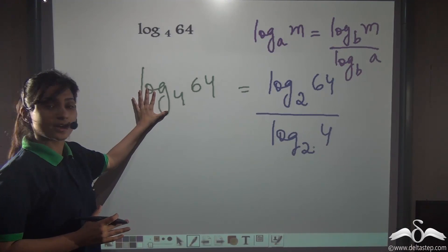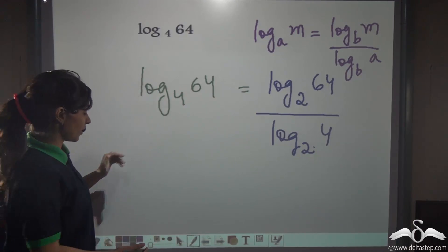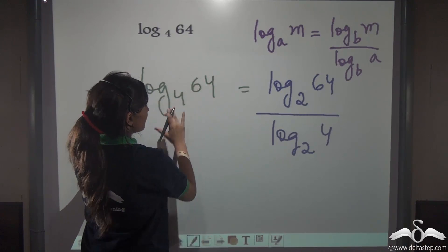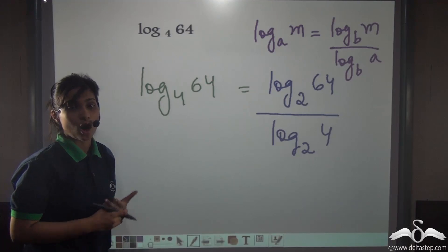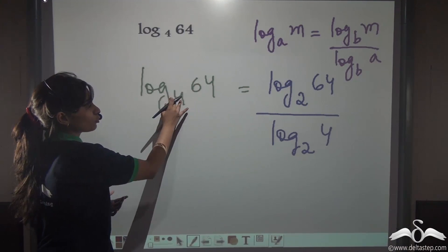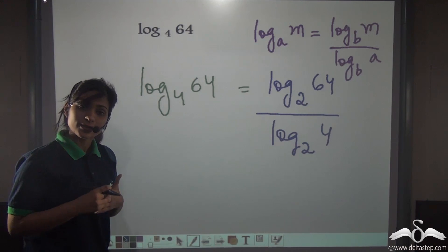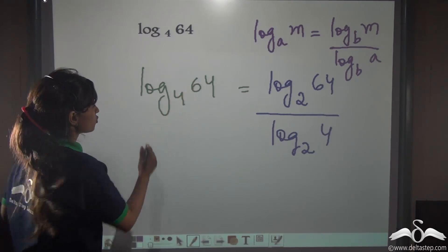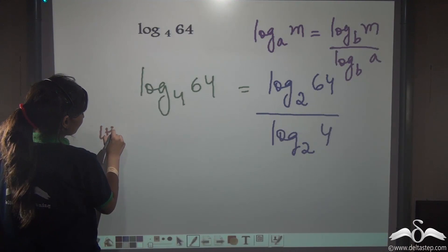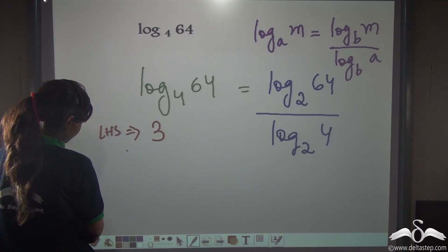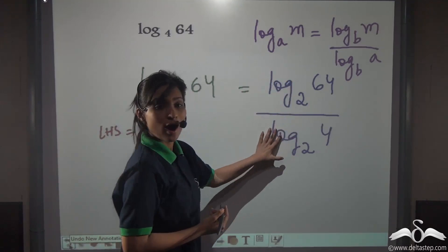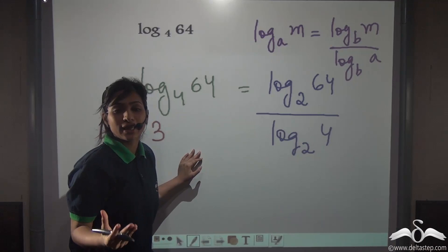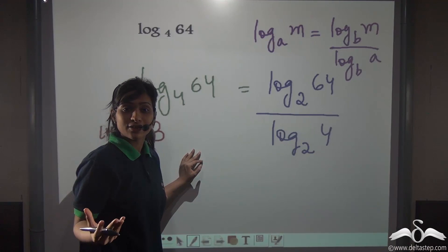Let us find out the RHS and LHS. What is the value of log 64 to the base 4? The answer is 3 because 4 multiplied to itself 3 times gives us 64. So LHS is 3. Now we will do RHS, so log 64 to the base 2. Can you tell me how many times 2 needs to be multiplied to itself to get 64?